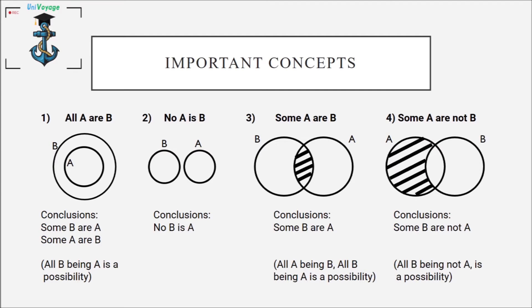The next case is 'no A is B.' This is a no-brainer — these are two separate circles without any intersection point, so the conclusion is simply 'no B is A.' The third case is 'some A are B,' where we have two circles intersecting, and the conclusion is 'some B are A.'